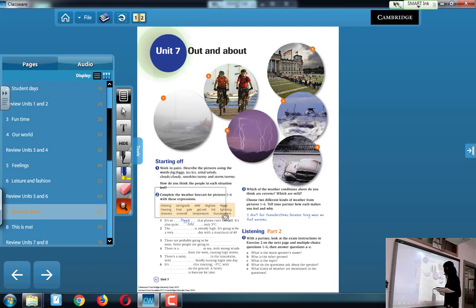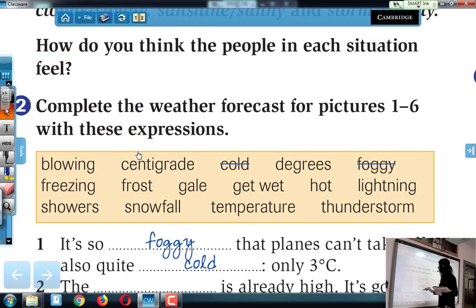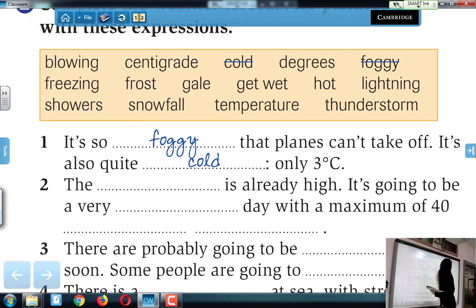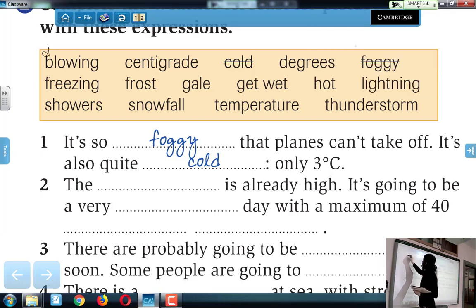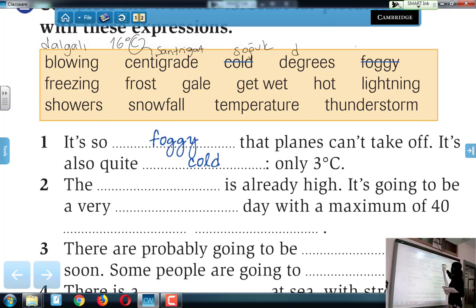İfadelerim şurada arkadaşlar. Bunların anlamlarını vereceğim size. Now look. The first one, blowing. Zaten biraz önce de söylemiştim. Dalgalı demek. Dalgalı ya da rüzgarlı anlamı da olabilir. Centigrade de, hani biz Türkçe'de bugün hava 16 santigrat derece olacak diyoruz ya. Şuradaki santigrat, aslında bu santigrat. Cold, soğuk demek. Degree, derece demek.